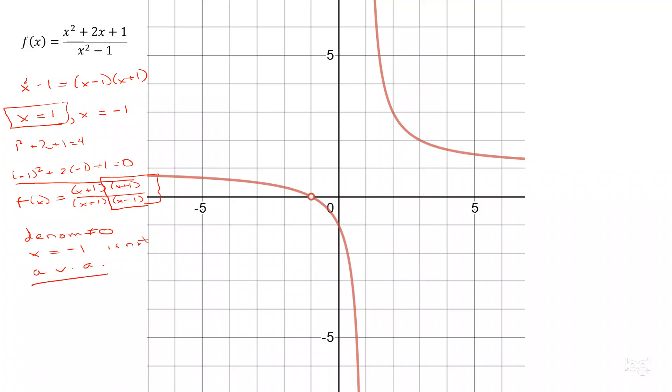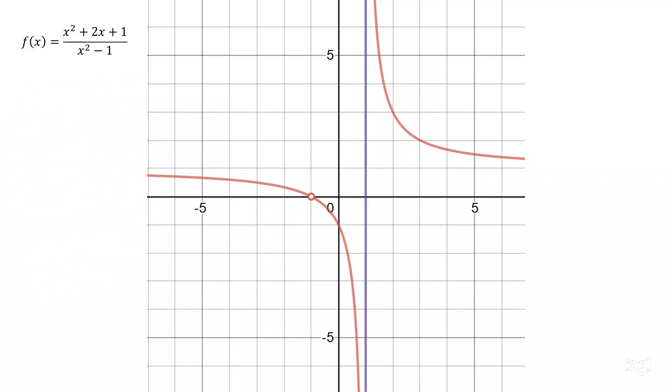So we have a single vertical asymptote in this problem when x equals 1. You can see it here in purple. The vertical asymptote is x equals 1. We notice x equals minus 1, the function is not defined, so there's a hole in our function, but not a vertical asymptote.